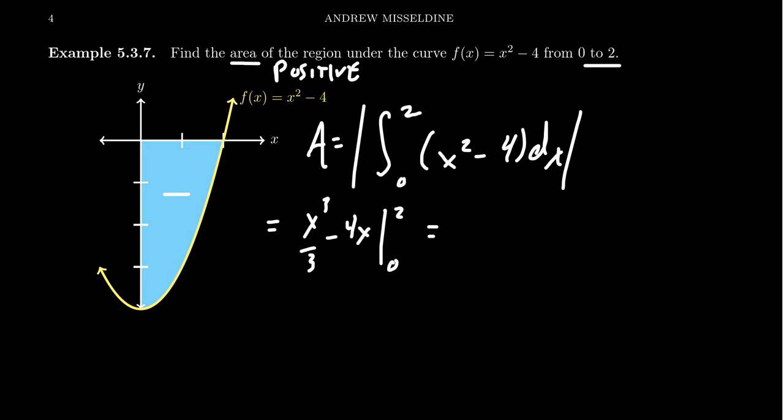Plugging in that 0 and 2, we're going to get the following. We will get 2³/3 - 4 times 2. That's the first part when we plug in the 2. When we plug in the 0...